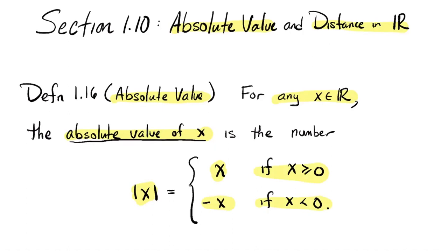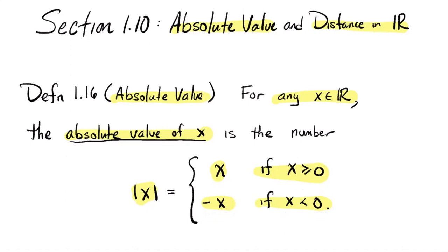It's a piecewise defined function. So the absolute value function's output depends on the sign of the input. In particular, if the input of the function is greater than or equal to zero — if it's a positive number or zero — the absolute value of the number is just the number. If the input is a negative number, strictly less than zero, its absolute value is its opposite. So if x is a non-negative number, zero or positive, the absolute value of it is itself. If it's a negative number, the absolute value of it is its opposite.